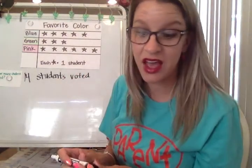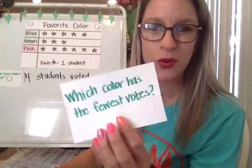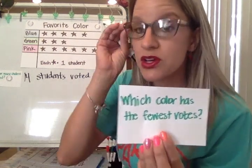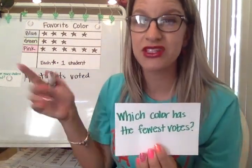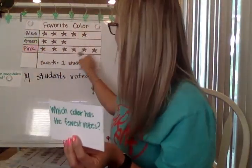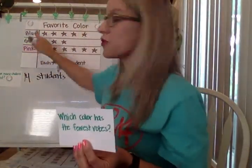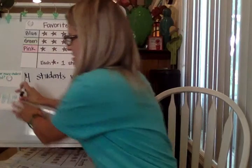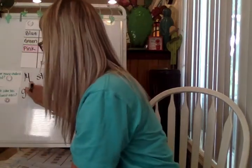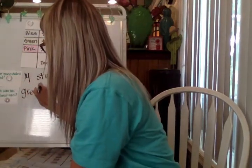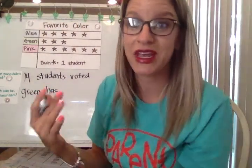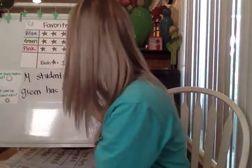Let's look at some of the other things you can see. Which color has the fewest votes? It's easy to look at a picture graph and notice which line of information is shorter than all of the others. The green is the shortest, so that means it has the fewest votes. Green has the fewest votes.